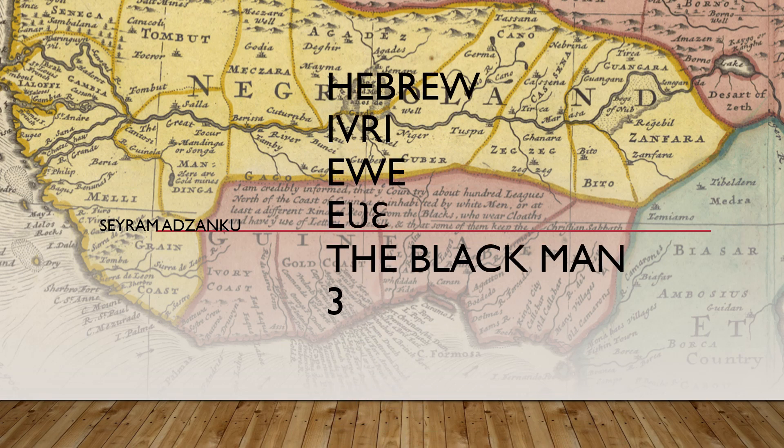Hello, welcome to video number three in the series Hebrew Ivri Ewe Ebe the Black Man. My name is Seyram Ajanku.